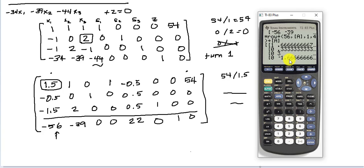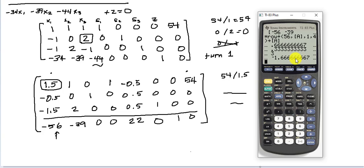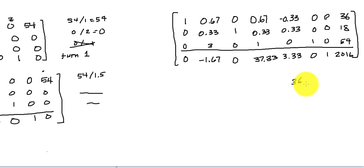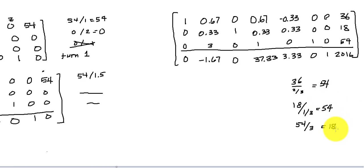We still have a negative indicator. Writing the new matrix out, we still have negative 1.67 in one column, so we go through the ratio test again: 36 divided by 0.67 (which is two-thirds, equivalent to multiplying by three-halves), 18 divided by 0.33, and 54 divided by 3. The results are 54, 54, and 18 — so 18 is the smallest, making the entry 3 in row 3 our pivot for the final rotation.